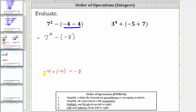Or we could also model this using integer chips. To model negative four, we have four negative integer chips, and if we add negative four, we have four more negative integer chips. Notice how we have eight negative integer chips, verifying the sum is negative eight.